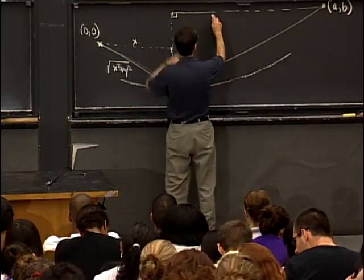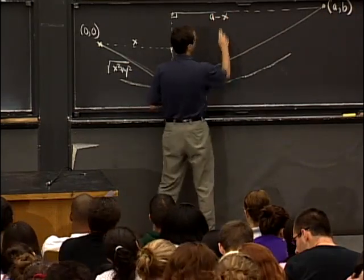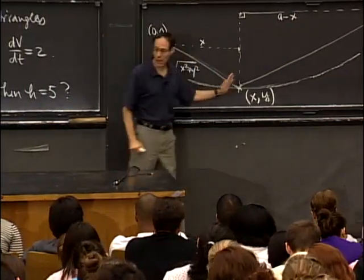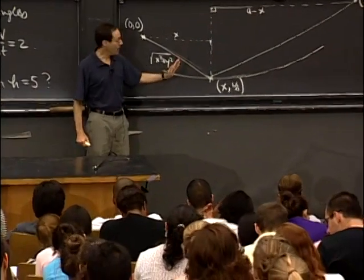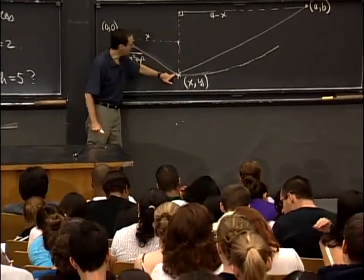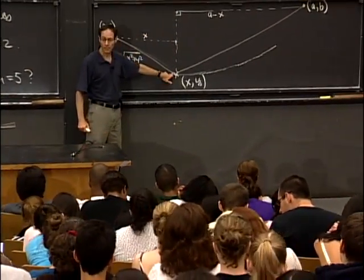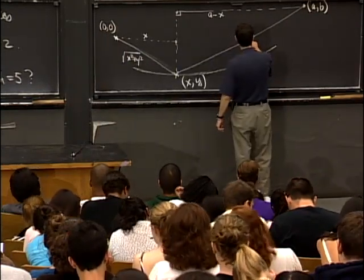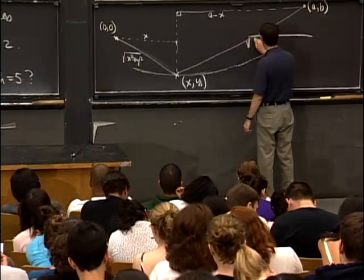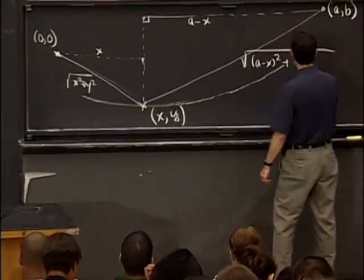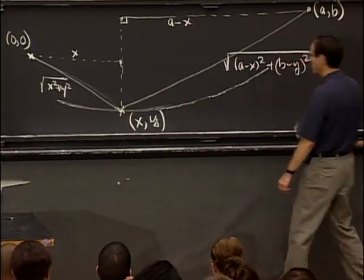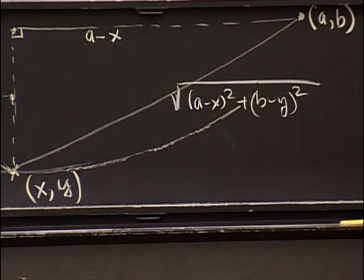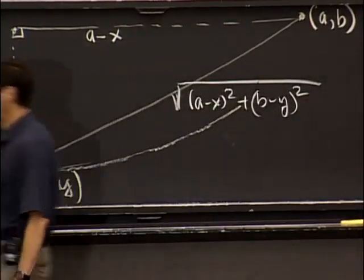And similarly, the vertical distance will be b - y. And so the formula here, which is a little complicated for this length, is the square root of (a-x)² + (b-y)². So here are the two formulas that are going to allow me to set up my problem now.